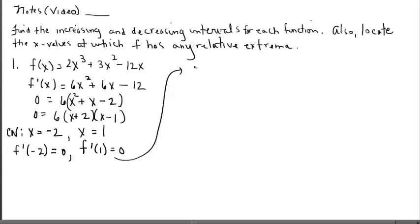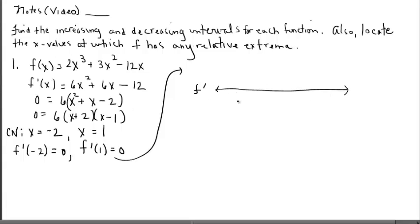I'm paying attention to the domain of the given function, which is all real numbers. So when I build an f prime number line, I'm going to leave a little space above for f information. The domain for the function is all real numbers, so my f prime number line doesn't need to account for any breaks or vertical asymptotes — I'll just show arrows on the ends. Next, we put our critical numbers in order: negative two and one. These two critical numbers divide the f prime number line into three sections. Above negative two and above one, I'll indicate zero slopes.